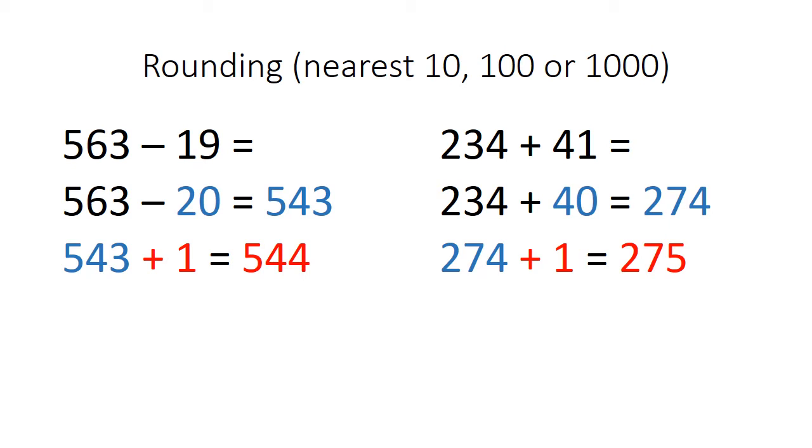I have two examples for you. My first is a subtraction example. 563 take away 19. I wouldn't use counting for this because 19 is quite a lot larger than a one-digit number. However, I also know that 19 is very close to 20 so I would round it up to 20.